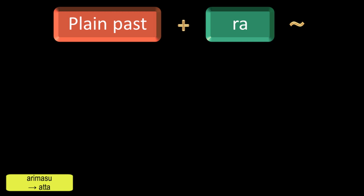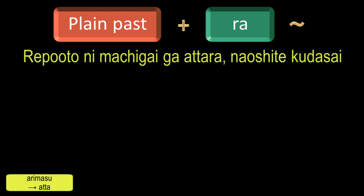And to say 'if there is a mistake in my report, please correct it,' in Japanese it will be: Reporto ni Machigai ga Attara Naoshite kudasai. Here, Machigai means mistake, and Naoshite is the te-form of the verb Naoshimasu, which means to correct.